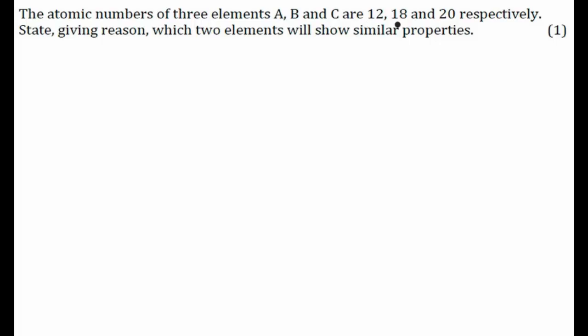Dear friends, let's see this particular problem. The atomic number of three elements A, B and C are 12, 18 and 20 respectively. State, giving reason, which two elements will show similar properties.